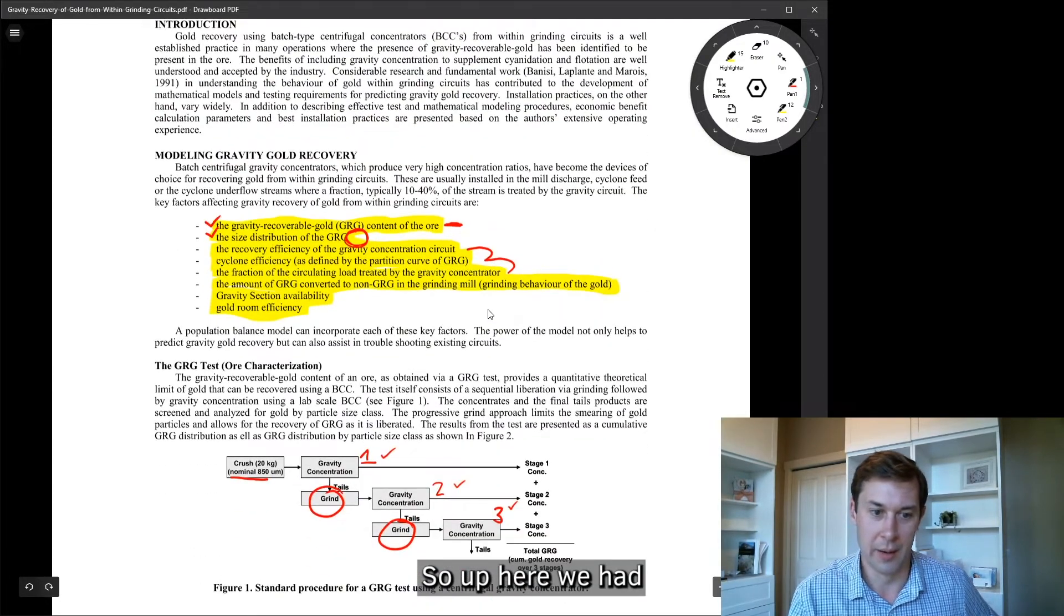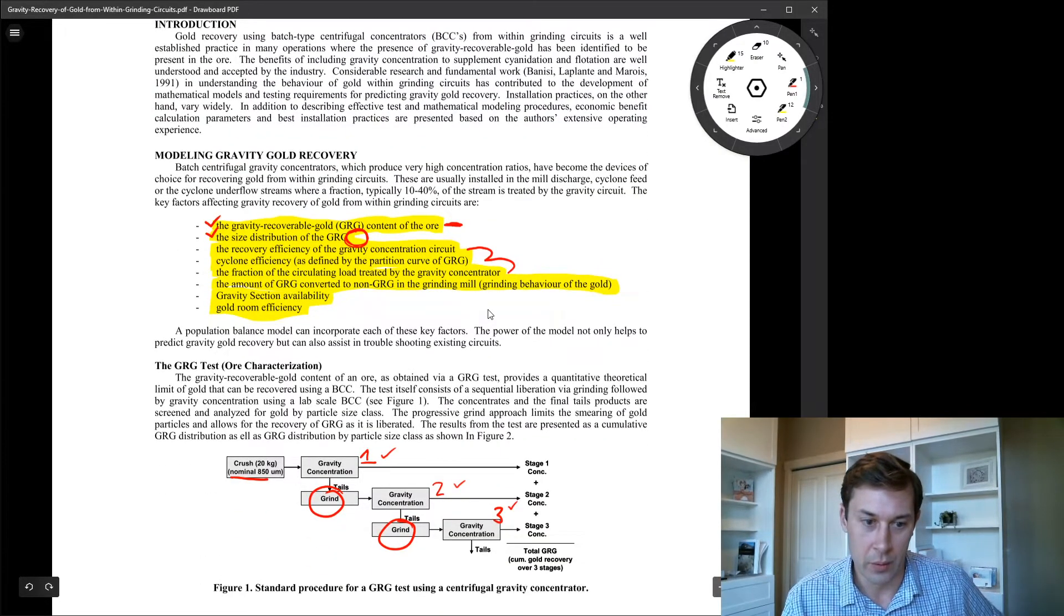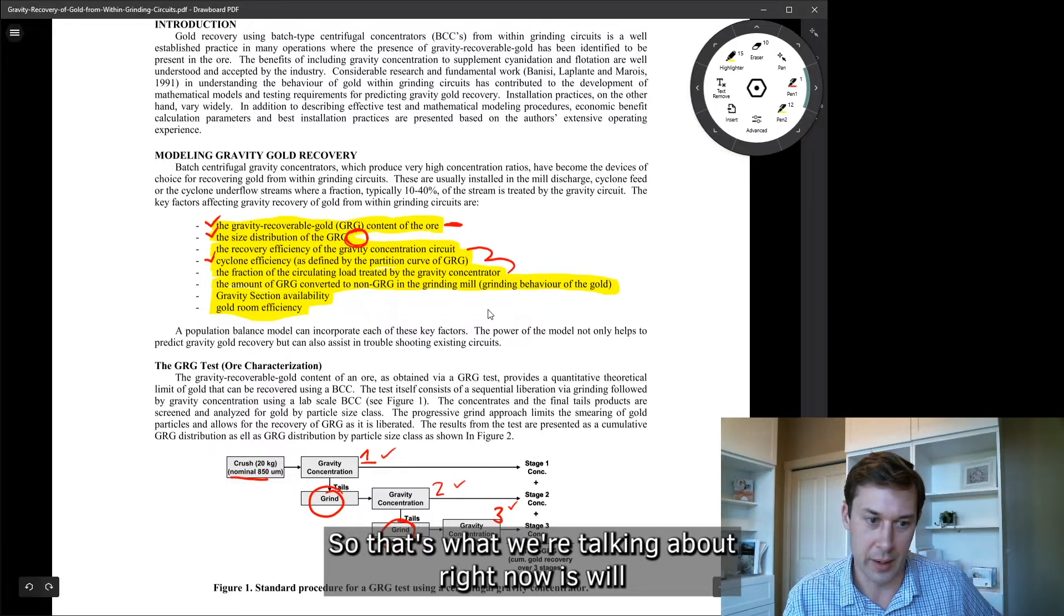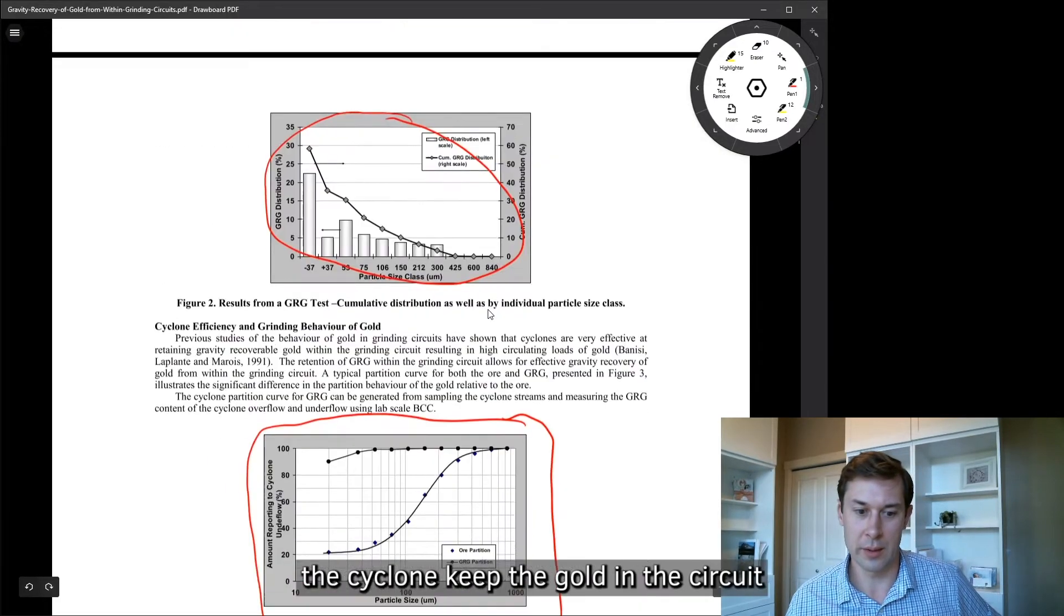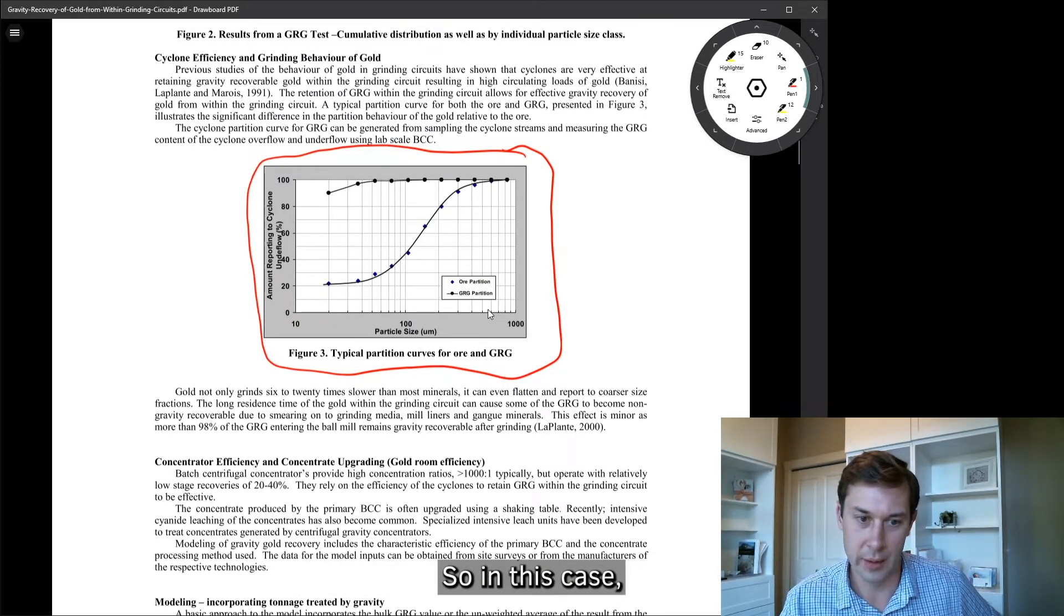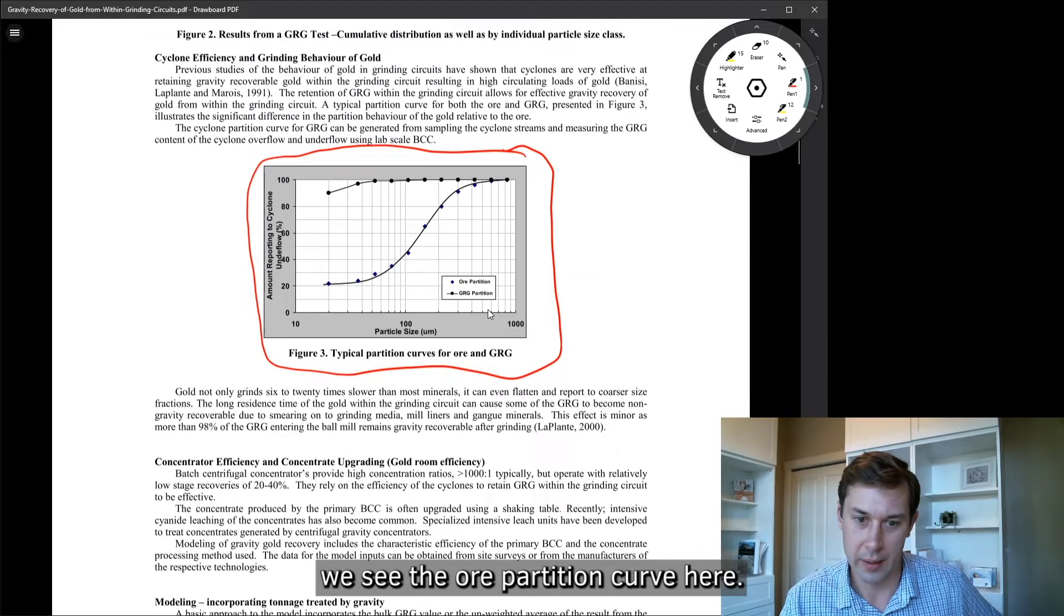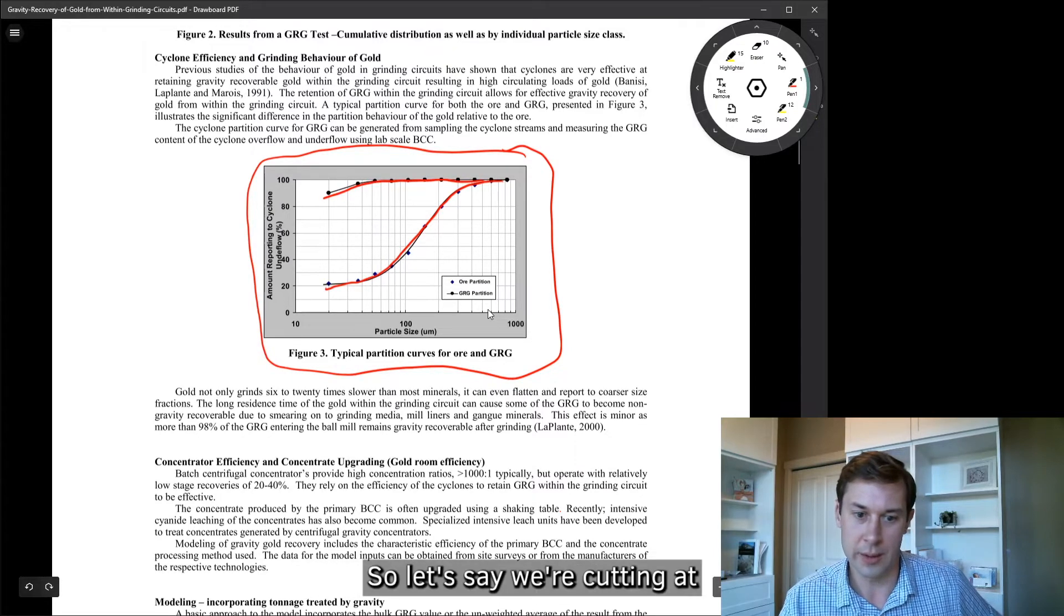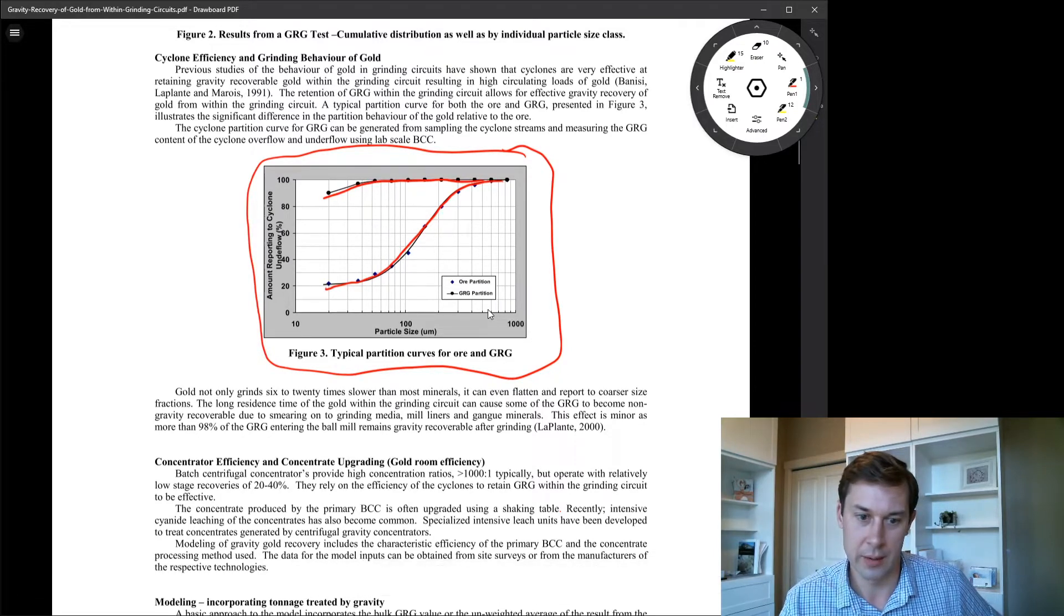So up here, we had cyclone efficiency defined by the GRG partition curve. So that's what we're talking about right now. Will the cyclone keep the gold in the circuit at the designed cut point? So in this case, we see the ore partition curve here, and we've got the gold partition curve here. So let's say we're cutting at 100 micron, right here.